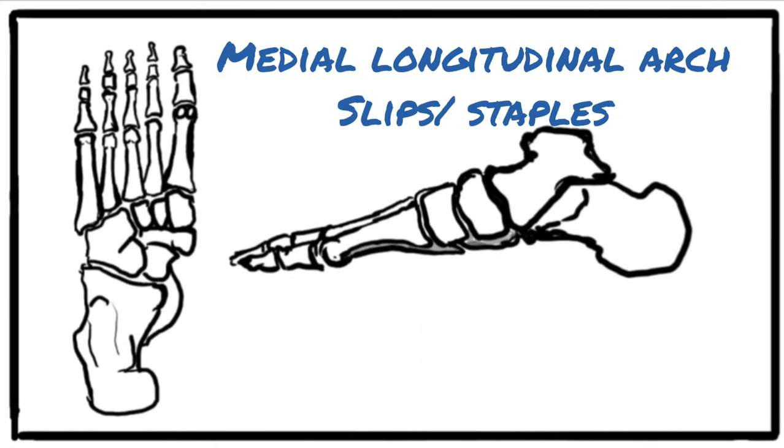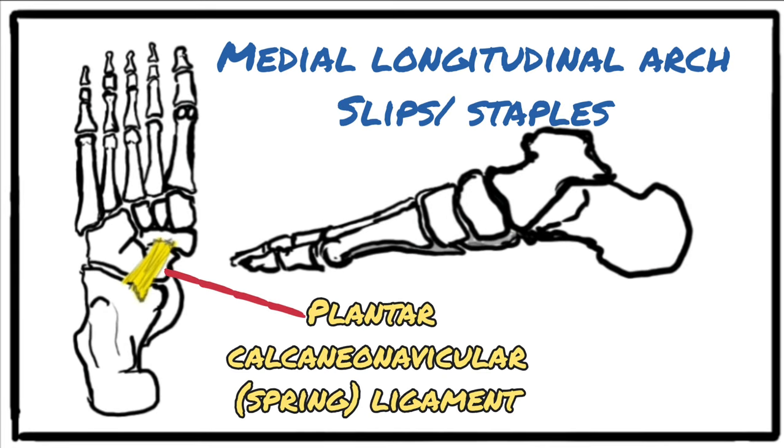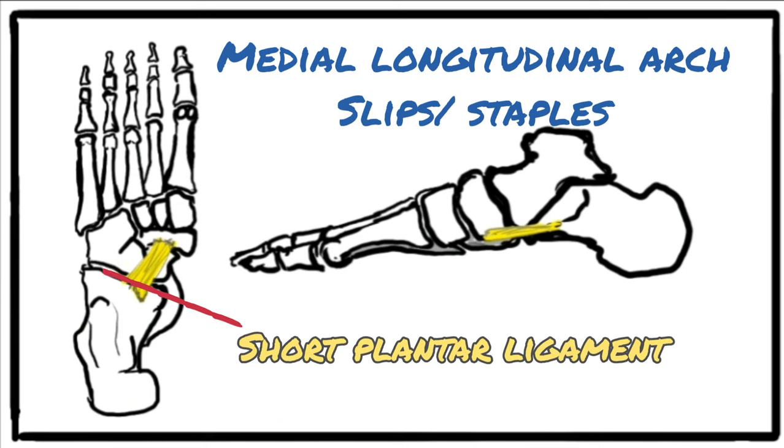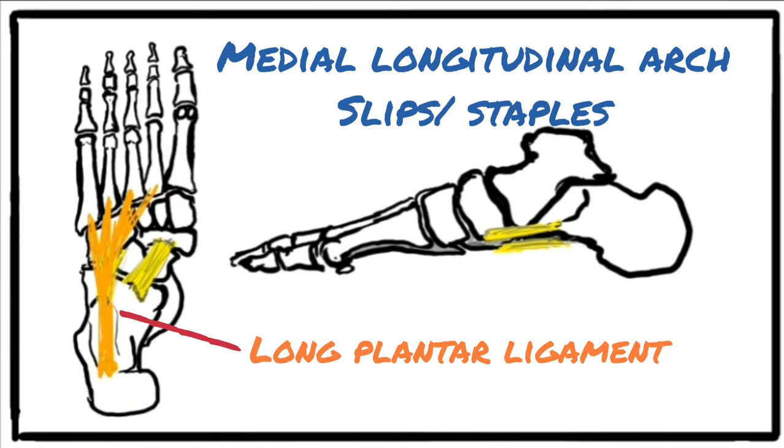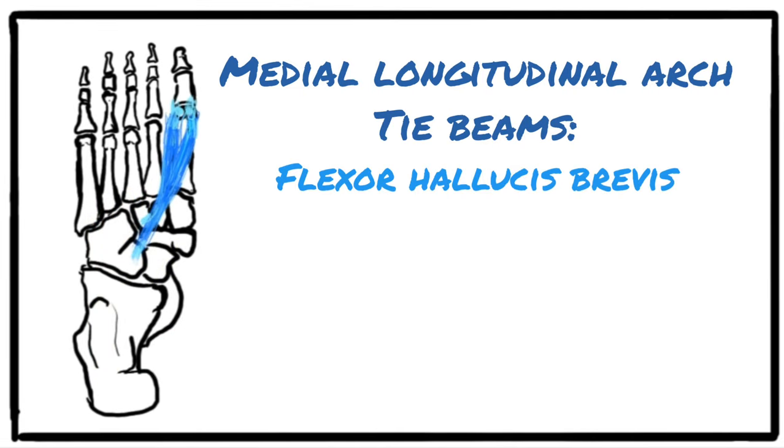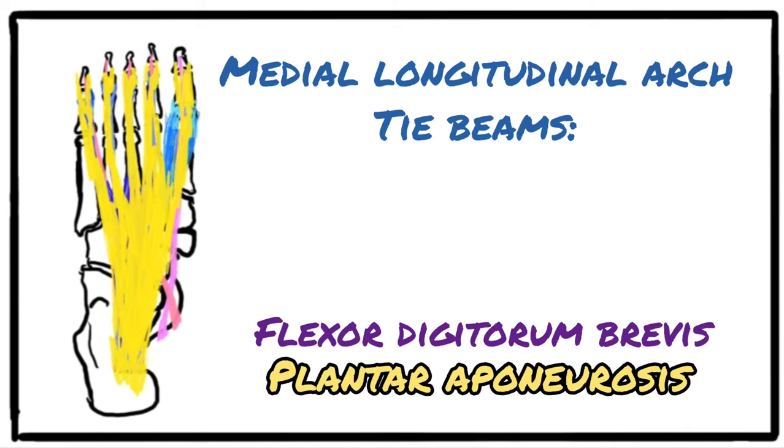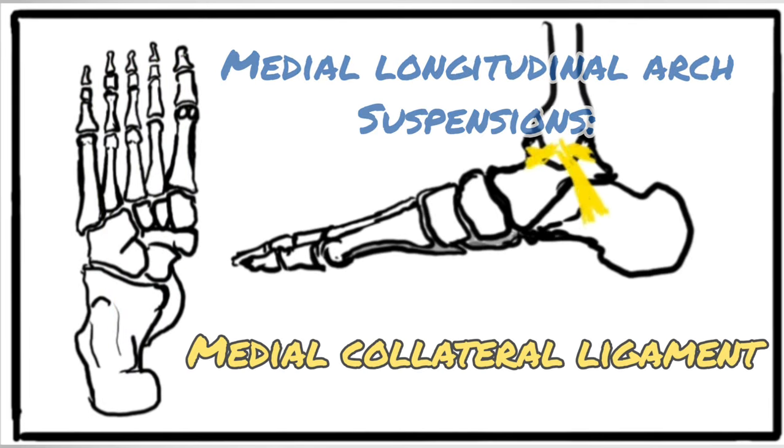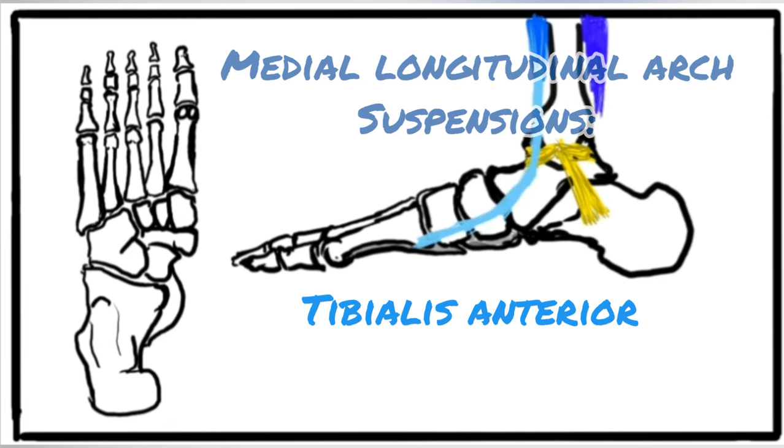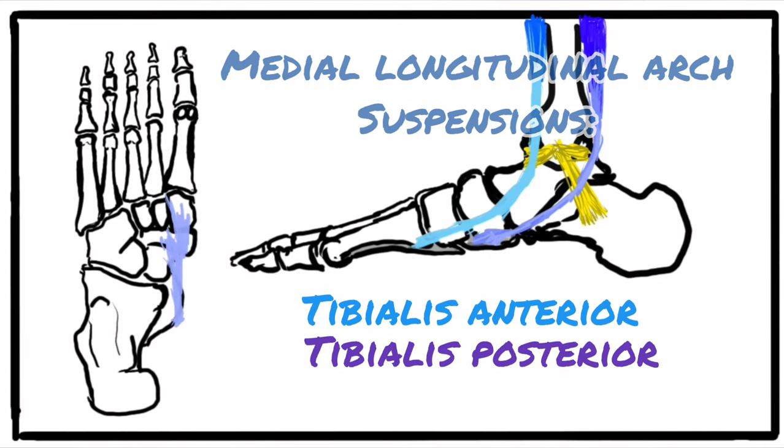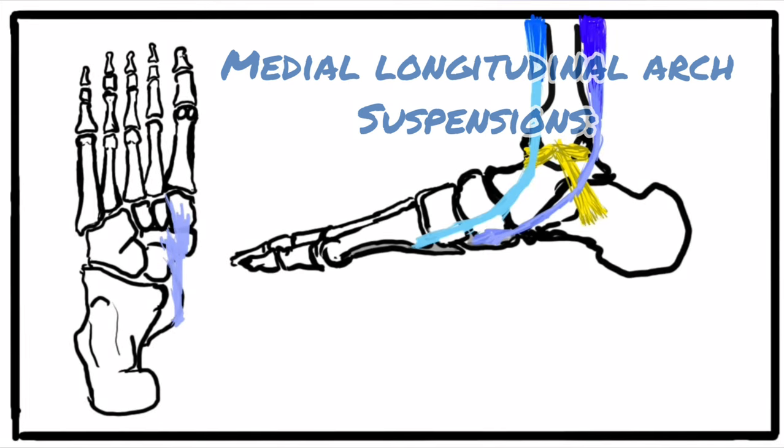The slips or staples are formed by the plantar calcaneonavicular or spring ligament, and the short and long plantar ligaments. The tie beams are flexor hallucis brevis, flexor hallucis longus, flexor digitorum longus, flexor digitorum brevis, and plantar aponeurosis. Suspension is done by the medial collateral ligament, tibialis anterior, and tibialis posterior. Muscles are the main stabilizing factor for the medial longitudinal arch.